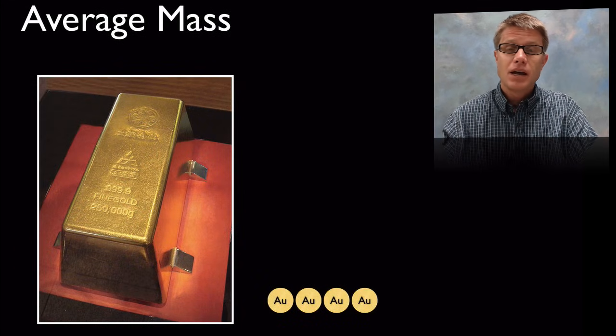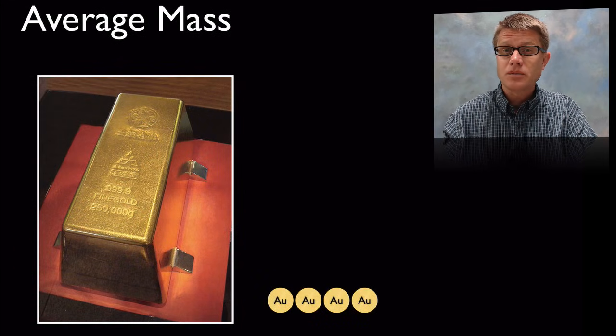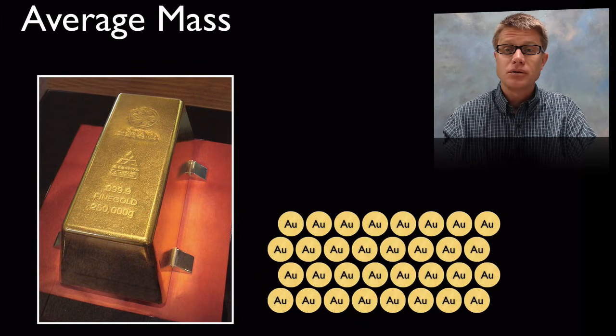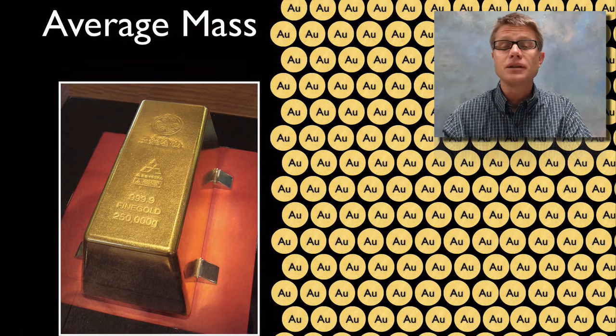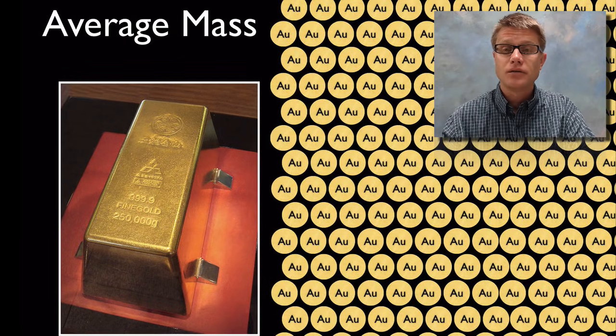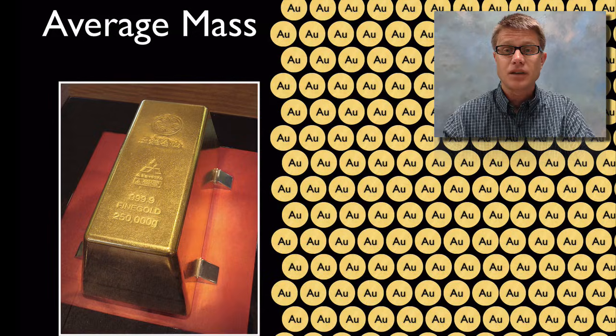And we find the same thing in matter. That's because it's made up of these atoms. And so it doesn't matter if we have 4 atoms of gold or 32 or billions billions billions of atoms. It's still going to have that same average mass.